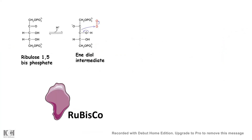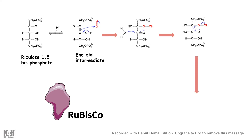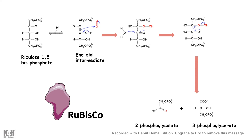Alternatively, rubisco can work in an oxygenase paradigm, where the first step is similar — the deprotonation by the lysine group of rubisco forms an enediol intermediate. This enediol intermediate is a highly reactive substance which can interact with oxygen as well. Once it interacts with oxygen, it forms several intermediates which are ultimately hydrolyzed to 2-phosphoglycolate and 3-phosphoglycerate. This 2-phosphoglycolate enters the photorespiration cycle and does not produce carbohydrates, making this quite a wasteful process.